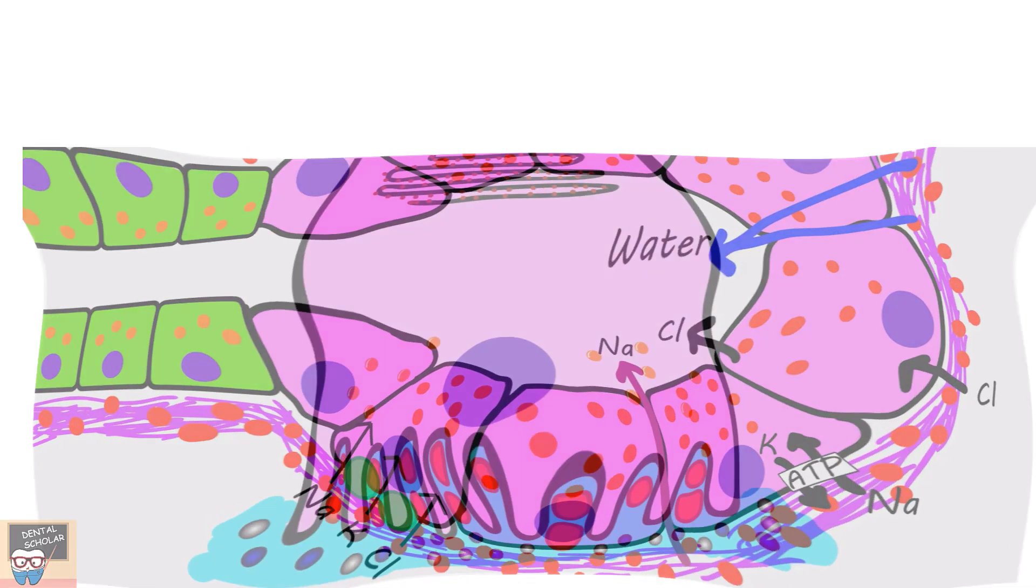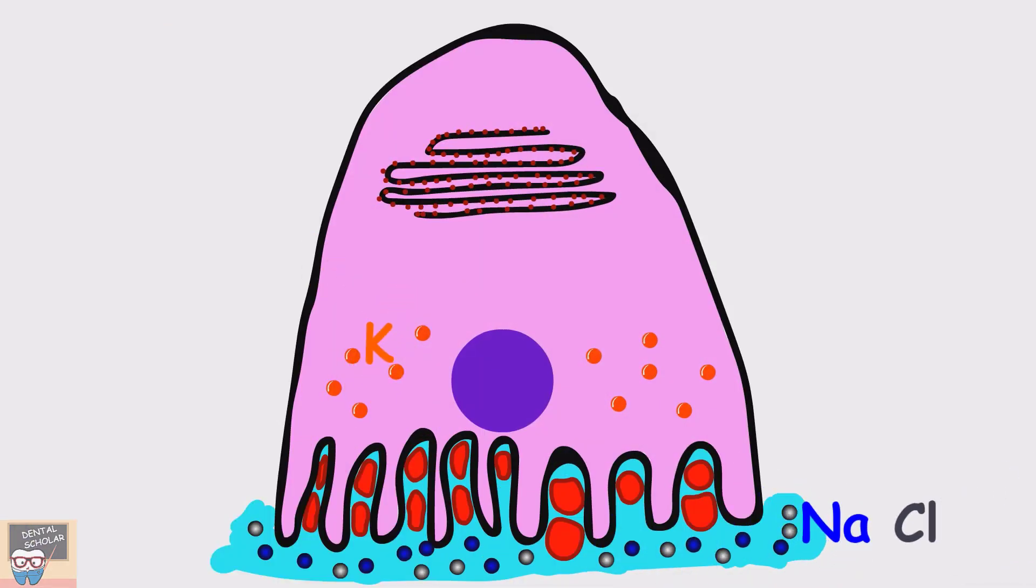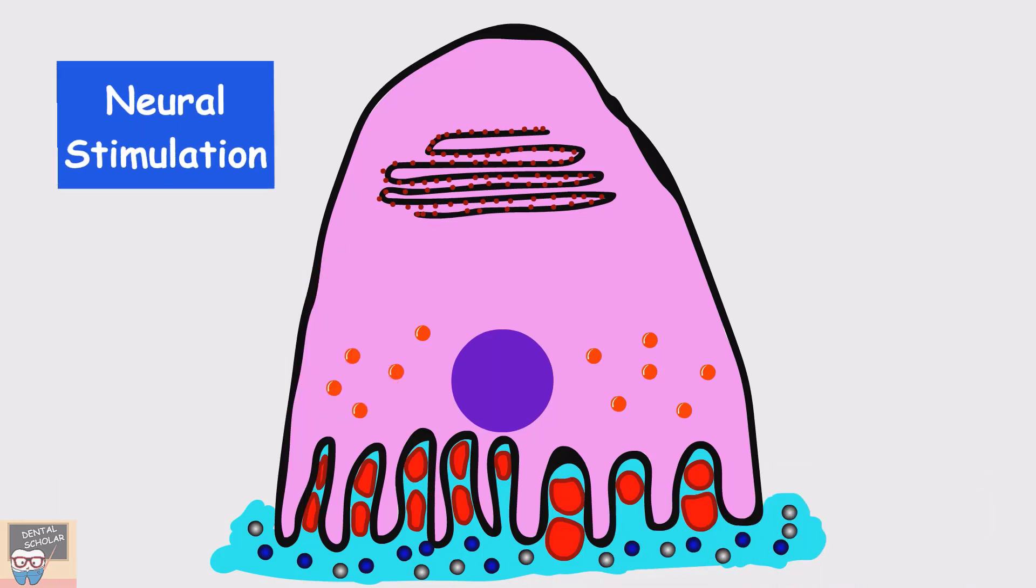Let us now see how the saliva is produced in the secretory cells. Let's first start with the water component of saliva. Salivary gland is the only gland that has an exclusive neural stimulation, that is sight, smell or even thought of food can trigger saliva secretion. So, the first step in saliva secretion is stimulus.